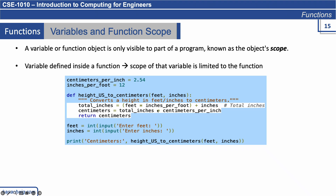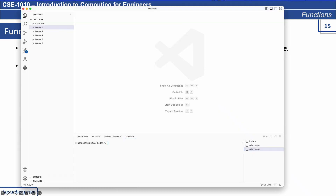Generally speaking, total_inches is a variable we are defining inside this function, which means total_inches will not be visible to the program outside this function's boundary. Feet and inches are provided as parameters into this function. But inches_per_foot — where is it getting it from? inches_per_foot is not defined anywhere inside this function; it is taking that value from whatever is defined outside the function definition. It performs some calculations and returns certain parameters.